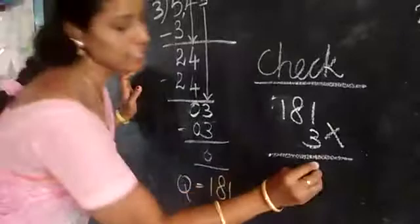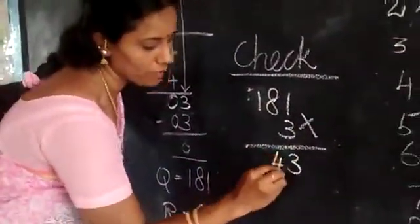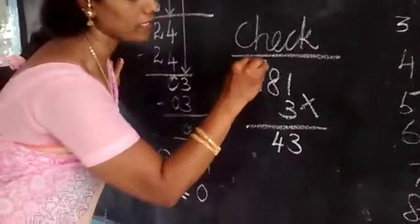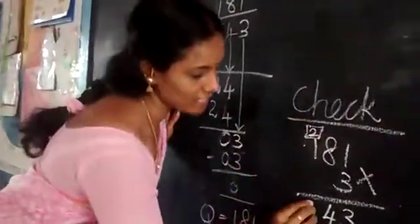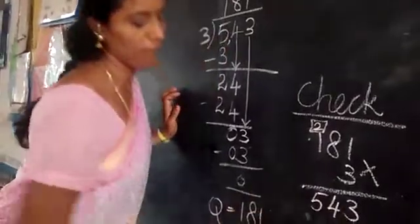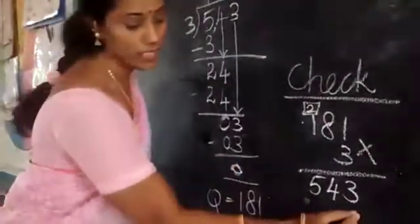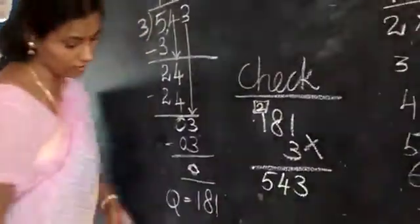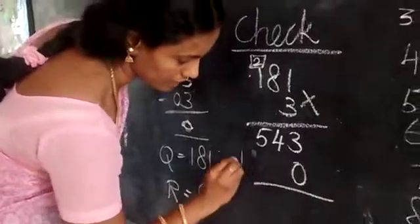Now, one three's are three. Eight three's are twenty-four. For twenty-four, place four here and remaining two here. One three's are three. Three plus two, five. Five. Now, the remainder should be added with that. What is the remainder? Zero. What is the remainder here? Zero. Zero. So, don't forget to add this remainder.